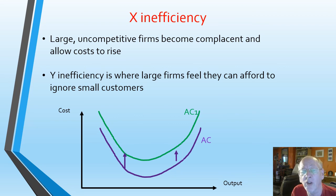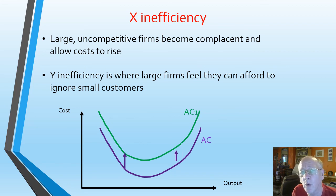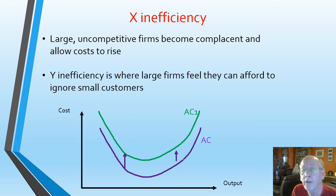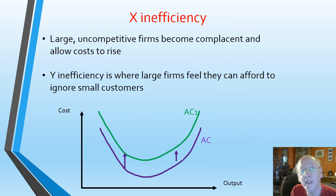Y inefficiency is not on the spec, but it's where large firms basically feel they can ignore small customers. If you watch a programme like Watchdog, a lot of the time they're talking about small consumer complaints about how large firms have let them down — that would be Y inefficiency. You don't need to know it for the spec, but it's one of those useful things you can always throw into an answer to enhance it. And that's all you need to know about efficiency and inefficiency.